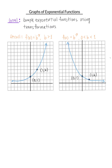Let's review a little bit. Recall that this is the graph of f(x) = b^x if b is strictly greater than 1. Notice the key points: exponential functions always have to go through (0, 1) and then (1, b), where b is the base of the function.